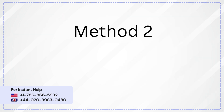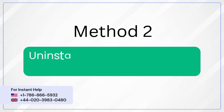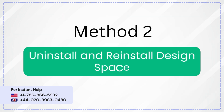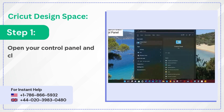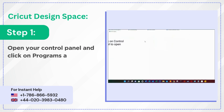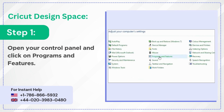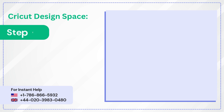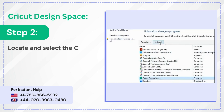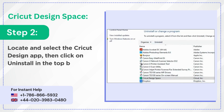Method 2: Uninstall and Reinstall Design Space. Step 1: Open your Control Panel and click on Programs and Features. Step 2: Locate and select the Cricut Design app, then click on Uninstall in the top bar.